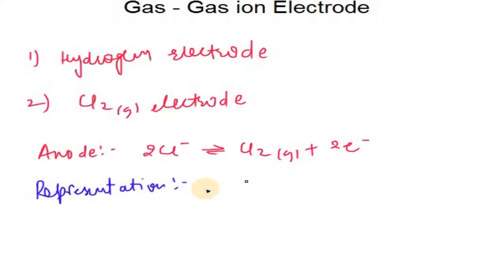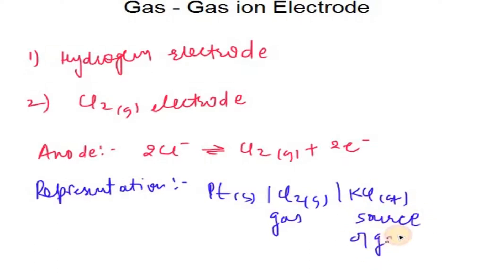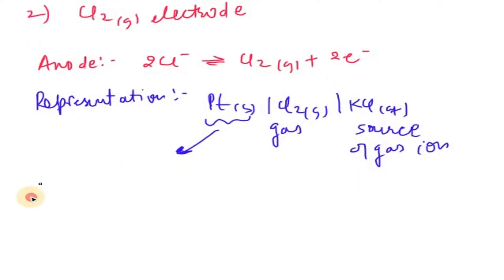The cell representation at the anode is written as: Pt(s) | Cl₂(g) | KCl(aq). Platinum acts as an absorber — it is the metal we use — and Cl₂ and KCl represent the gas ion source at the anode.